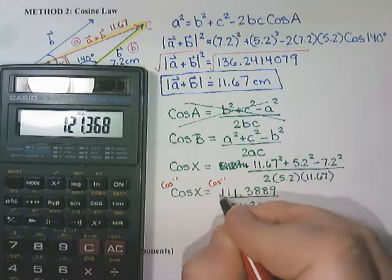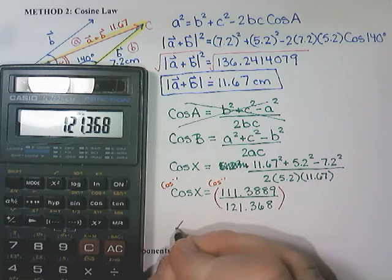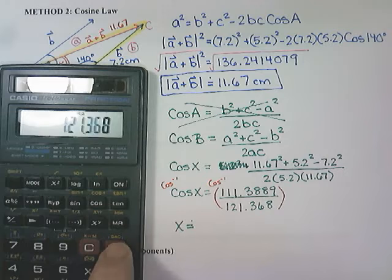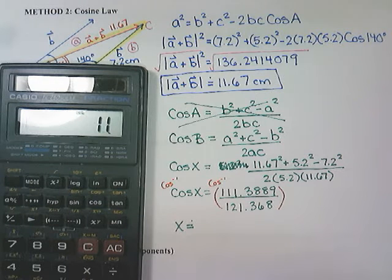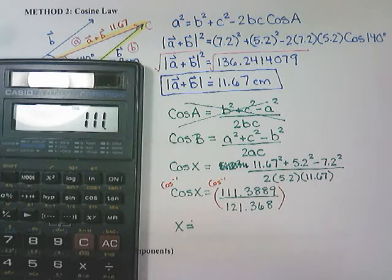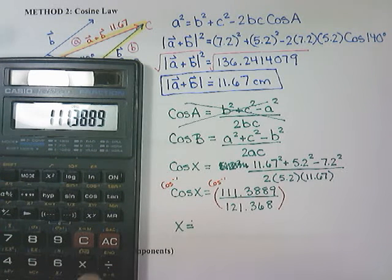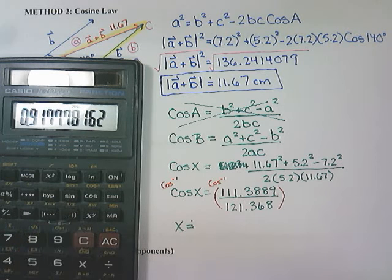So on my calculator, I have to do the bracket first, so 111.3889 divided by 121.368, close my bracket, and then do my inverse cosine.